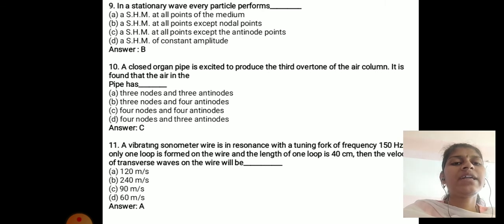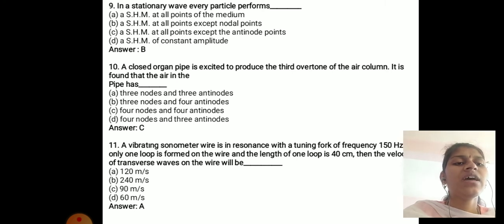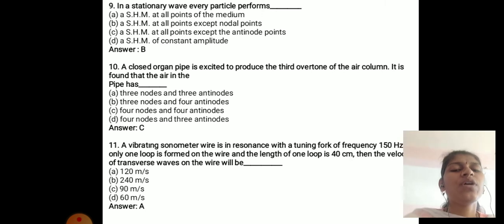A vibrating sonometer wire in resonance with a tuning fork of frequency 150 Hz forms 1 loop of length 40 cm. The velocity of transverse waves on the wire is 120 m/s.